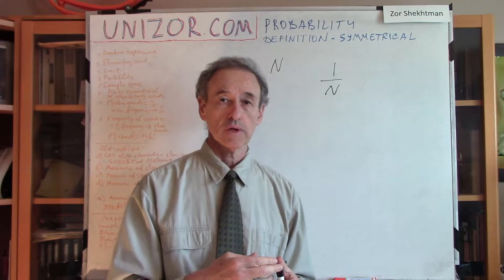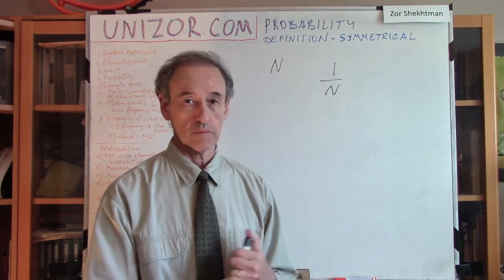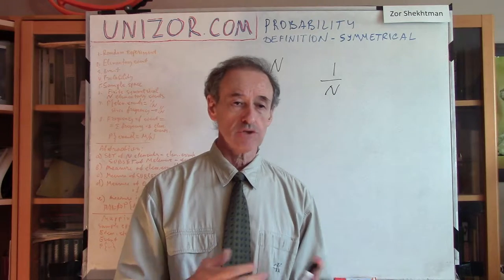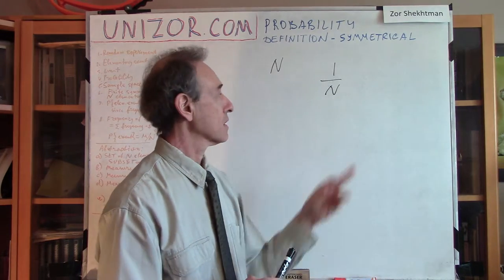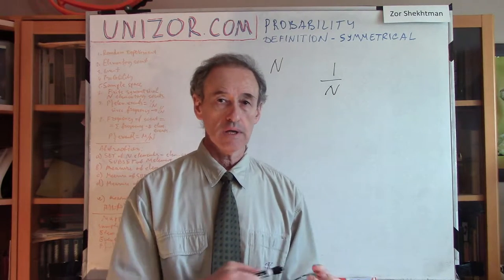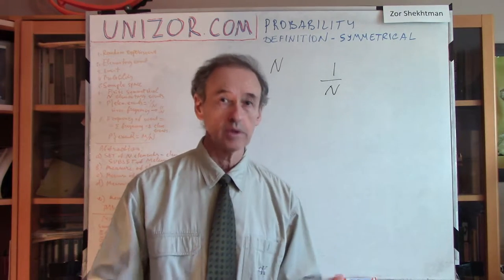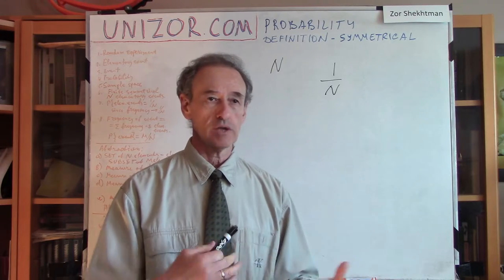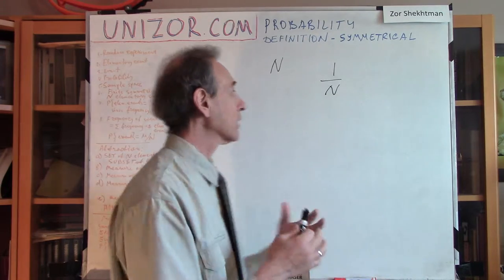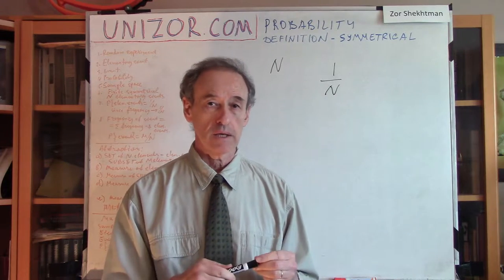Frequency is the number of cases when a particular elementary event occurs divided by the total number of experiments. This means we can associate the number 1/n with any particular elementary event out of whatever the possible outcomes are, and we can call it the probability. Now let's talk about how we can translate this into a more mathematical language.